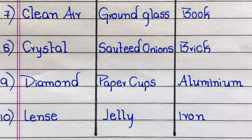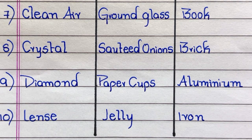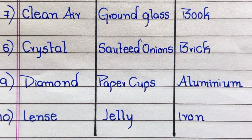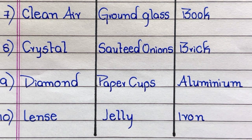Seventh example of a transparent object is clean air, eighth crystal, ninth diamond, tenth lens. Seventh example of a translucent object is ground glass, eighth sauteed onions, ninth paper cups, tenth jelly.